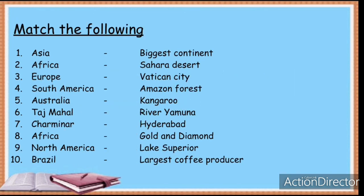Match the following: Asia — biggest continent; Africa — Sahara Desert; Europe — Vatican City; South America — Amazon Forest; Australia — Kangaroo; Taj Mahal — River Yamuna; Charminar — Hyderabad; Africa — Gold and Diamond; North America — Lake Superior; Brazil — largest coffee producer.